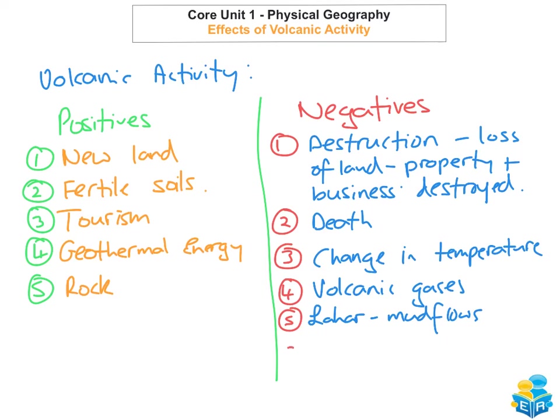The sixth negative impact of volcanic activity is acid rain. Volcanoes cause up to 20% of acid rain globally each year.